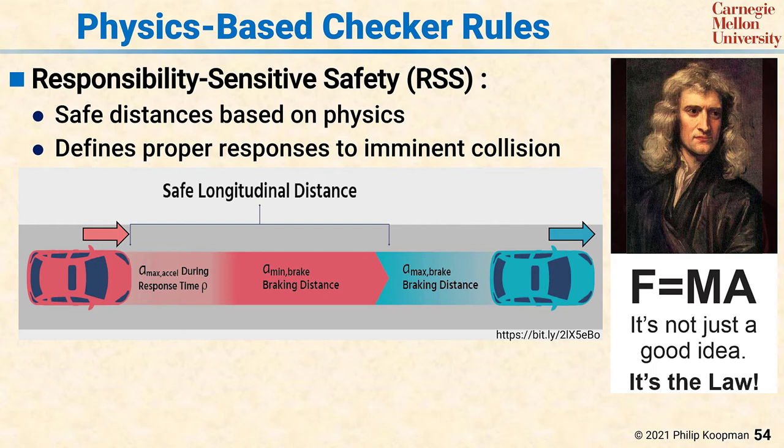Some Newtonian mechanics calculations — that end up being a little more complicated than you might think — create a solution in which the following car can always know the minimum safe following distance to avoid any possible collision with the car in front of it. If the following car is closer, it should reduce speed to give more following distance, and if it's farther away, then it's permitted to close the gap a little if it desires to do so.